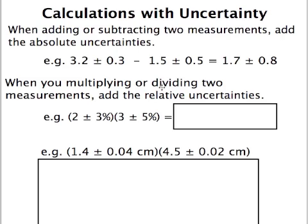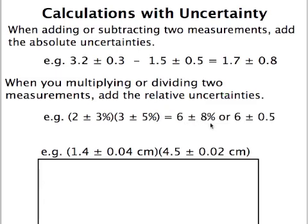When you're multiplying or dividing two measurements, you would add the relative uncertainties. The relative uncertainties was the percentage uncertainties that I talked about before. So the uncertainty will be 3% of 2 and 5% of 3. And so when you multiply them together, you'd multiply the original numbers, so 2 times 3 is 6, and you add the relative uncertainties, so it gives you 8%. 8% of 6 is around 0.5.